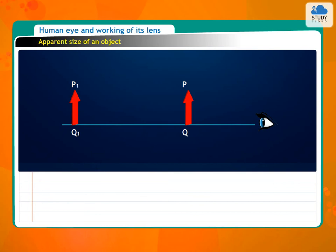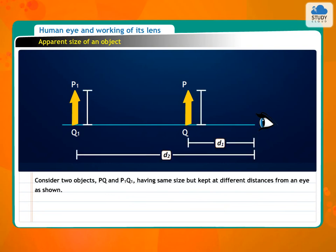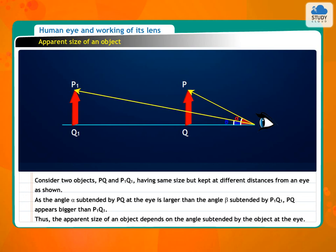Apparent size of an object. Consider two objects, PQ and P1Q1, having the same size but kept at different distances from an eye. As the angle alpha subtended by PQ at the eye is larger than the angle beta subtended by P1Q1, PQ appears bigger than P1Q1. Thus, the apparent size of an object depends on the angle subtended by the object at the eye.